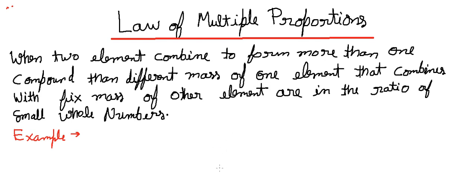Hello friends, today's topic is the Law of Multiple Proportion. According to this law, when two elements combine to form more than one compound, then different masses of one element that combine with a fixed mass of the other element are in a ratio of simple whole numbers. Let's understand this definition with the help of a simple example.